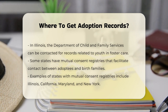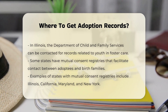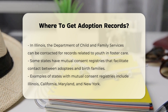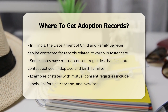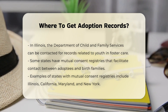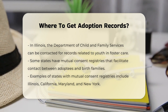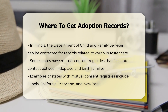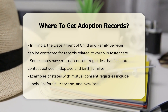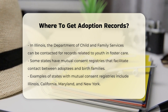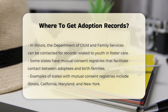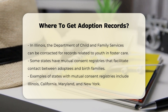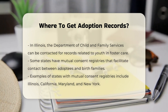Some states have mutual consent registries, such as those in Illinois, California, Maryland, and New York. These registries allow birth parents, adult adoptees, and birth siblings to consent to future contact if both parties agree.